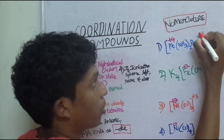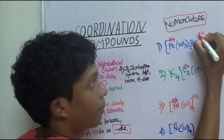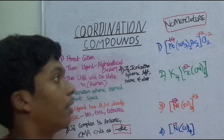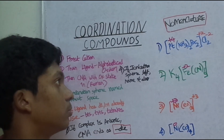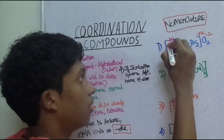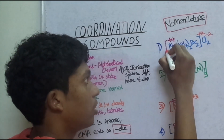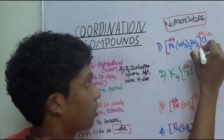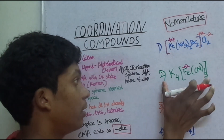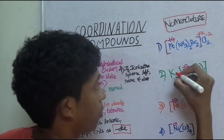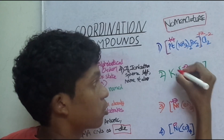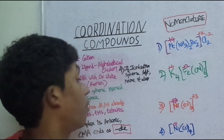So this is plus 2. Now, the coordination sphere is the cation. Potassium K is plus 1, and there are 4 potassiums, so that is 4 plus. This means the coordination sphere is minus 4. So now the cation is potassium.